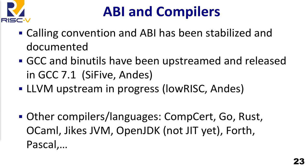On ABIs and compilers: the calling convention ABI is being stabilized and documented as part of the upstream process. Great news — GCC and binutils are upstream; in GCC 7.1, RISC-V is now a mainline architecture. LLVM upstream has been accepted and is in progress. Key companies participating include SiFive and Andes for the GCC port, and lowRISC and Andes for the LLVM support. There are a bunch of other compilers and languages that have been ported to RISC-V, including CompCert, the certified C compiler.